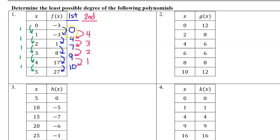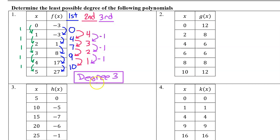Neither the first differences nor the second differences are constant, so this polynomial is neither degree 1 nor degree 2. However, the third differences are constant, so this polynomial is degree 3.